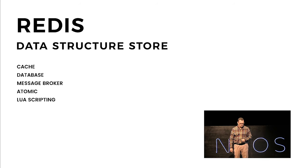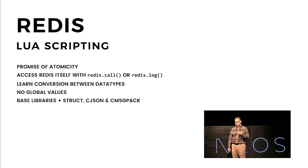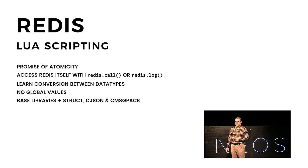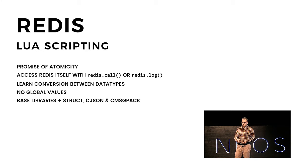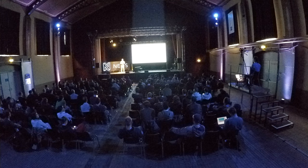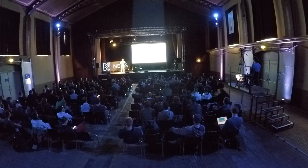It supports Lua scripting. So with Lua scripts, you have Redis's promise of atomicity — no other script or Redis command will be executed while your script is being run. Just be aware of slow scripts. Inside of the script, you can access Redis itself by doing a Redis call. You need to know about conversion between data types because Lua can't handle nil values in terms of unsets. There are no global values. And based on your interpreter, all the libraries we mentioned are in there, upgraded with a couple more libraries to have message packing — JSON and MessagePack.